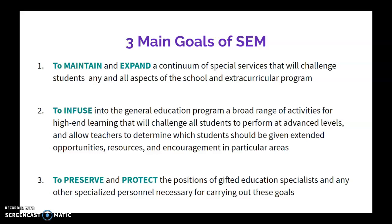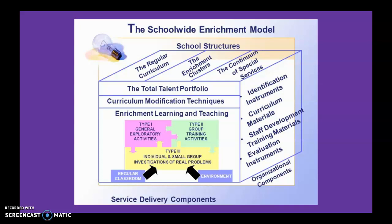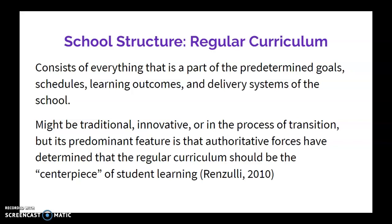This is the School-Wide Enrichment Model broken down. As you can see, there are many parts to it in terms of what sort of resources they have and their ideology. The first school structure is the regular curriculum, which consists of everything that is part of the already predetermined goals, the schedules, learning outcomes, and delivery systems. It could be a traditional classroom, innovated, or in the process of transitioning out of the traditional classroom.